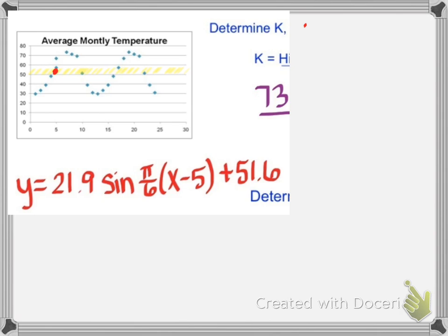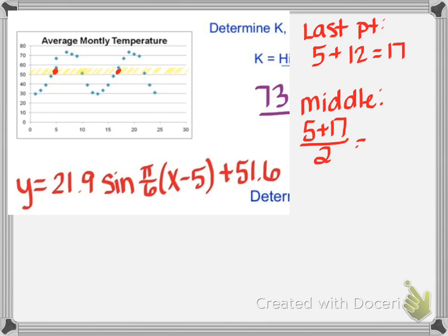Now I need the last point. Remember, to find the last point, we're going to take the first point, 5, and we're going to add the period to it, which is 12. And when I do that, I get 17. So now I'm going to go to 17 and put my next dot, my last dot. I'm going to find the middle of those. Now the middle is the average. So I'm going to add 5 and 17 together and divide them by 2. And when I do that, I get my middle to be 11. So at 11, I'm going to put another x-intercept.